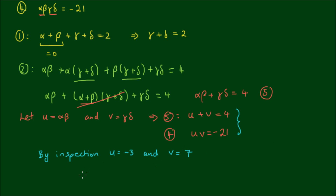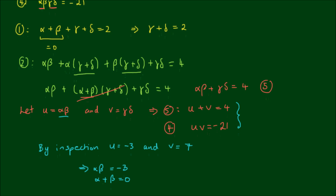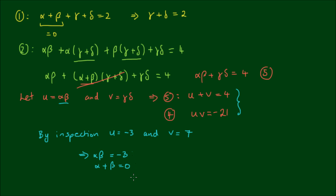With u equal to negative 3, alpha·beta equals negative 3, and we also have alpha plus beta equals 0. To satisfy this system, alpha equals the square root of 3 and beta equals the negative square root of 3. You can verify that this satisfies both equations.